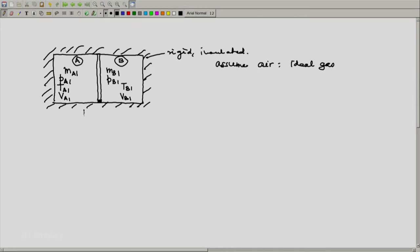Now let us list out the parameters in the final state. The final state, let the mass on the two sides be MA2 and MB2. Let the pressures be TA2 and TB2 and let the volumes be VA2 and VB2.